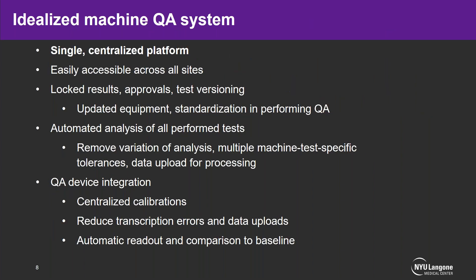With that in mind, we started thinking about what an idealized machine QA system would look like. Ideally, you'd have a single centralized platform, easily accessible across all sites, with locked results, locked approvals, and test versioning. It would be simple to update equipment and standardize QA. You'd have automated analysis removing variation, enable machine-specific test tolerances, and automate data uploading. We also hoped to incorporate QA device integration — centralizing calibrations, reducing transcription errors, and enabling automatic readout of devices compared directly against a baseline.